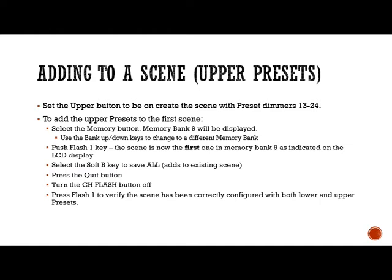We select the soft B key, which is 'all.' 'All' means it's going to add to the existing scene — everything that was stored before plus the new changes. We press the quit button to save, turn the channel flash button off, make sure we're still on bank nine, and press flash one to verify the scene has been correctly configured with both the upper and lower presets.